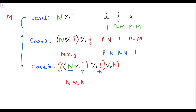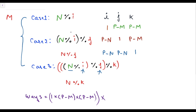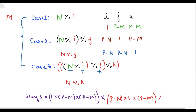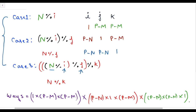These are the 3 possible ways to achieve the maximum possible score. The total number of ways equals: 1 × (p − m) × (p − m) for case 1, plus (p − n) × 1 × (p − m) for case 2, plus (p − n) × (p − n) × 1 for case 3.